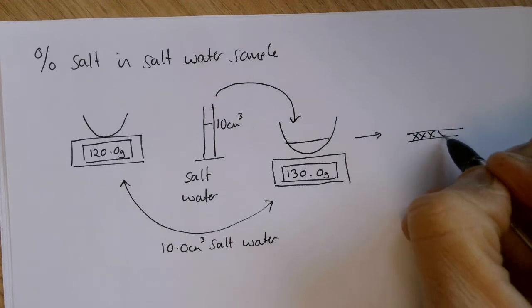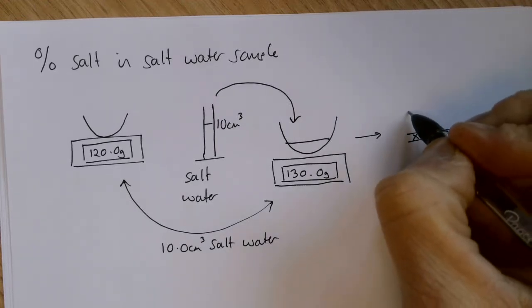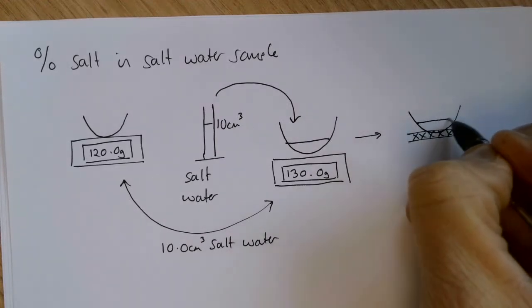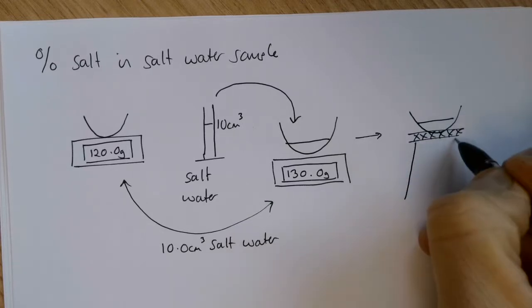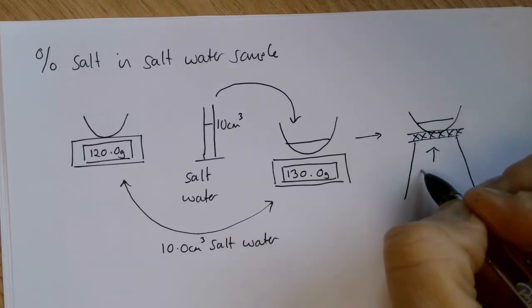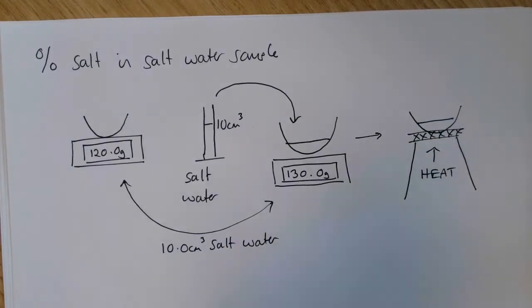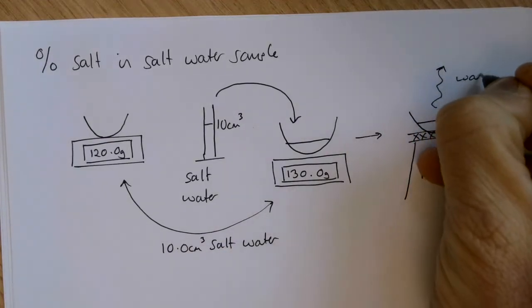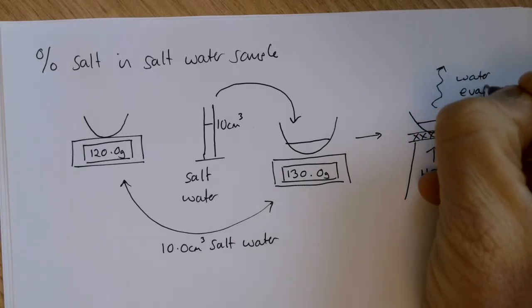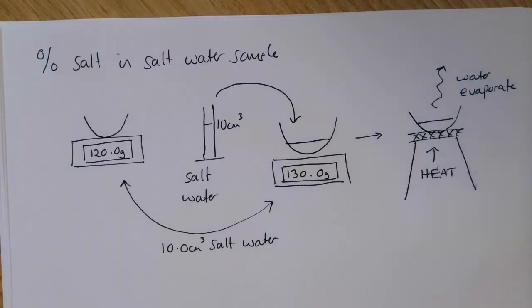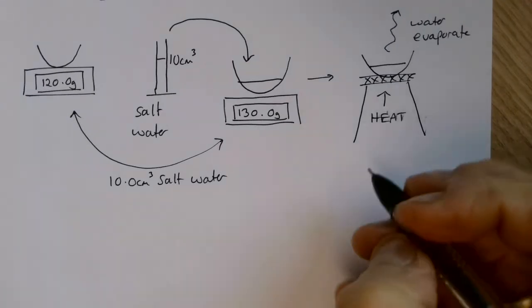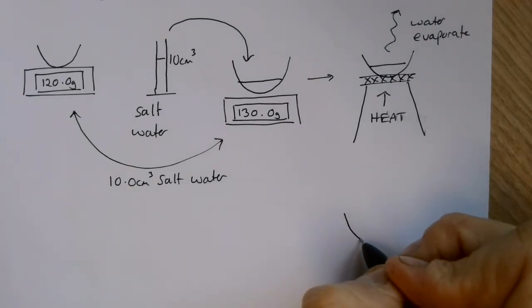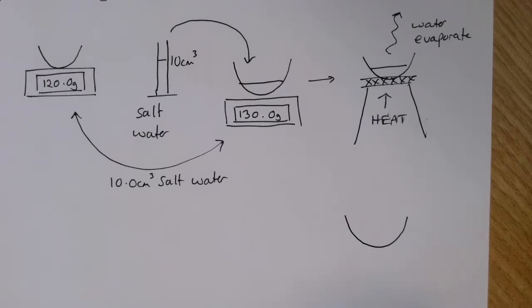What we then do is we put our evaporating basin with its water sample in it on a gauze which is also on a tripod, and then we would heat that with a Bunsen burner. Our first observation is that the water would evaporate.